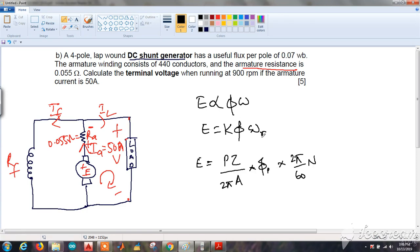K equals P Z by 2 pi A, where P is number of poles, Z is the total number of conductors, A is number of parallel paths. For lap wound, A equals the number of poles; for wave wound, A equals 2. Phi is flux per pole, and omega equals 2 pi n by 60. I have converted angular speed to mechanical speed, radians per second to RPM. Now n is in RPM because the question gives speed in RPM.